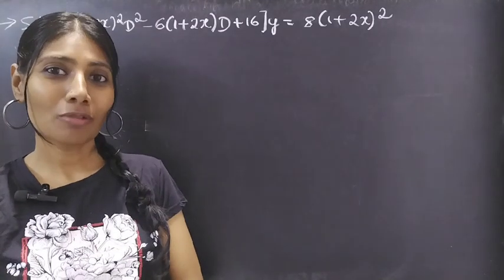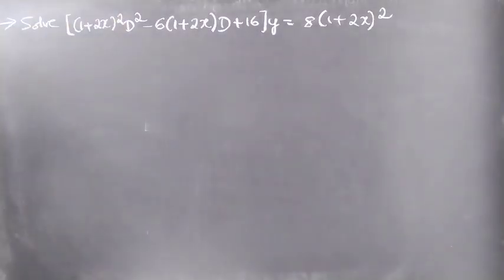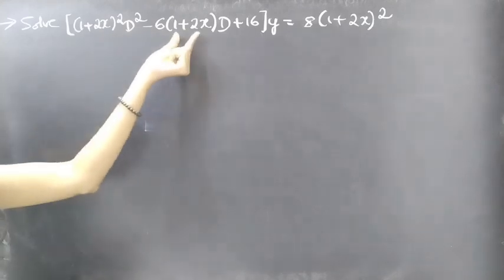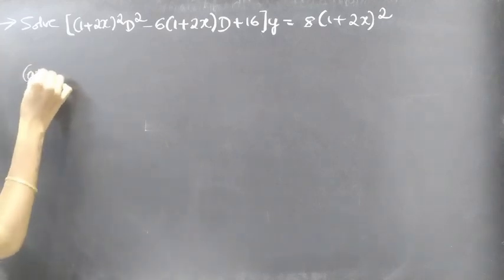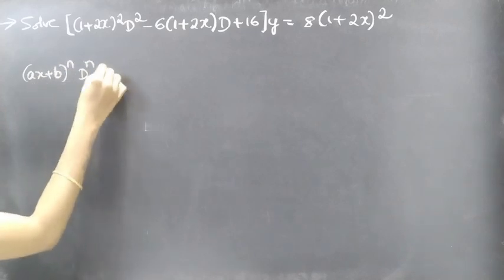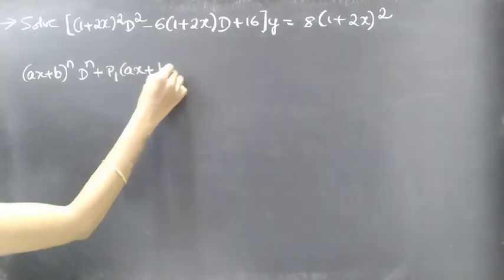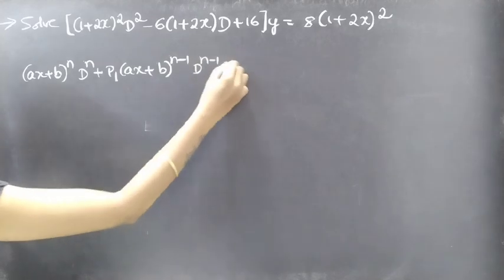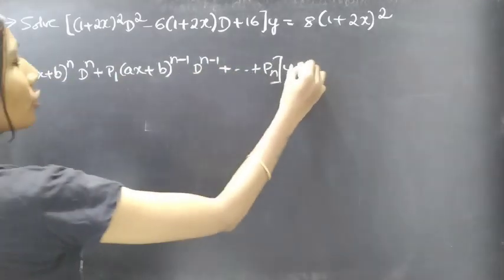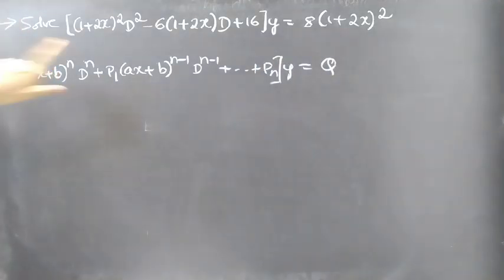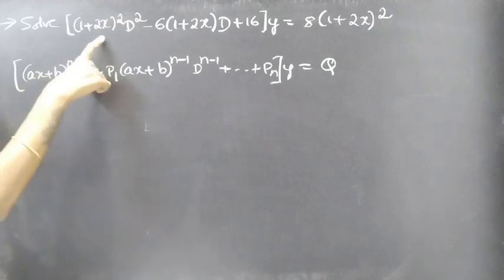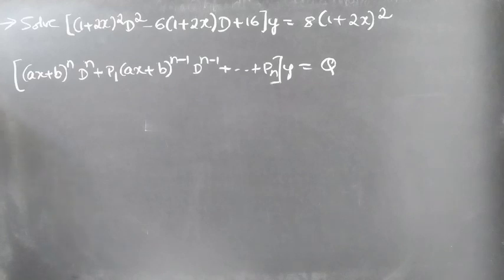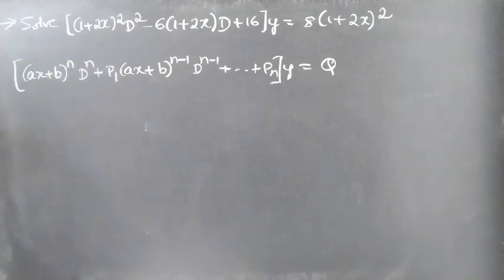Hello everyone, this is Zekalpana. In this video we are going to solve a Legendre's equation. The problem is to solve (1+2x)² D² minus 6(1+2x)D plus 16 into y equal to 8(1+2x)². We are given a differential equation of the form (ax+b)^n D^n + p₁(ax+b)^(n-1) D^(n-1) + ... + pₙ y = f(x). We will solve it by reducing to a linear equation with constant coefficients using a substitution.